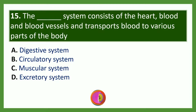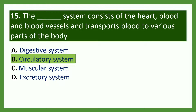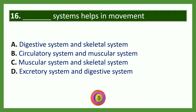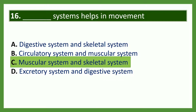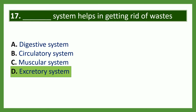The dash system consists of the heart, blood, and blood vessels and transports blood to various parts of the body. Options: digestive, circulatory, muscular, or excretory system. The answer is circulatory system. Which system helps in movement? Options: digestive and skeletal; circulatory and muscular; muscular and skeletal; excretory and digestive. The answer is muscular and skeletal systems. Which system helps in getting rid of waste? Options: digestive, circulatory, muscular, or excretory. The answer is excretory system.